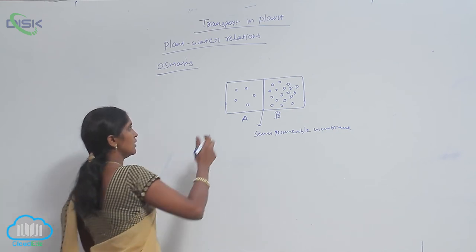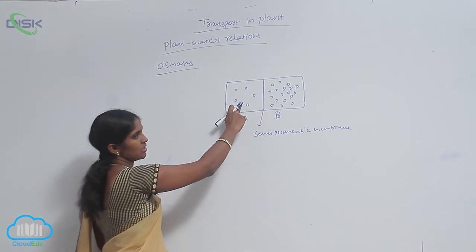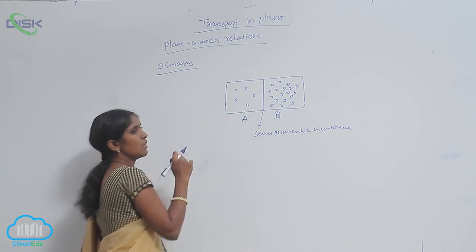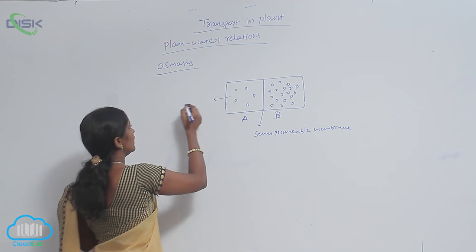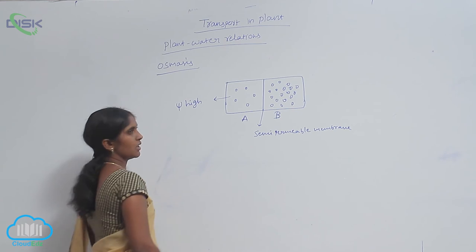You see here, in this case, within the cell, the solute concentration is less. The solute concentration is less means the water concentration is high. It means here, the water potential is high.